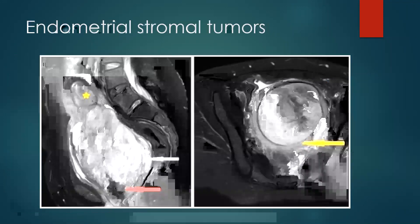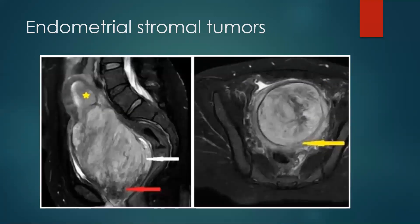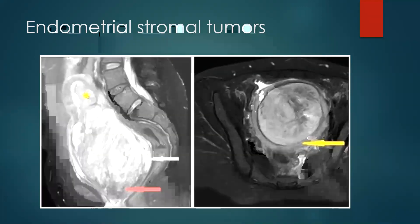The last differential is endometrial stromal tumor. As you can see here, there is a large mass most likely arising from the endometrium, dissecting through the myometrium into the pelvic side walls. The signal intensity is very distinctive — it is intermediately bright, rather than the dissecting leiomyoma signal, which is more or less similar to the adjacent muscles.